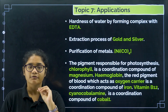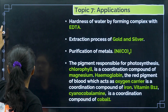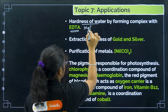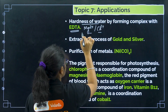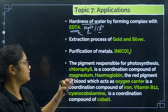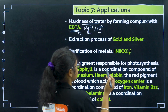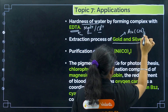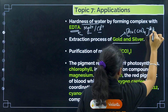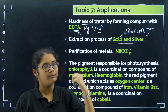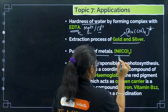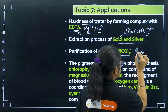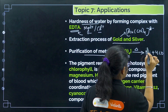Applications are very important — questions have been asked from here. First, hardness of water is removed using EDTA. Magnesium and calcium ions, which cause hardness, form a complex with EDTA. Second, in the extraction of gold and silver, gold forms the complex [Au(CN)₄]⁻, from which pure metal is obtained. Third, in the purification of nickel, nickel is converted to Ni(CO)₄, which undergoes decomposition to give pure Ni + 4CO.